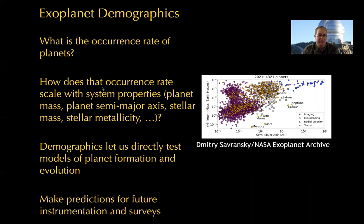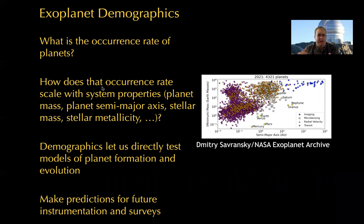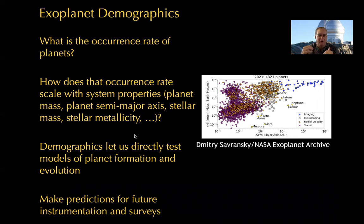How does the occurrence rate change as a function of planet mass? Do you have more planets that are small and close to the star, or more planets that are large and far from the star? How does it change with stellar properties like the mass of the star? All of these are basically imprints of how planet formation worked. A good measure of exoplanet demographics lets us directly test theories of both planet formation and evolution, things like migration over time — because you see where the planets are now, which tells us something about how they formed, where they formed, and where they moved over time.